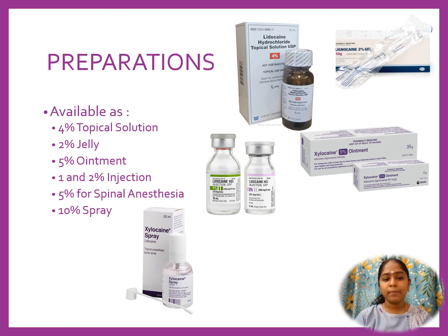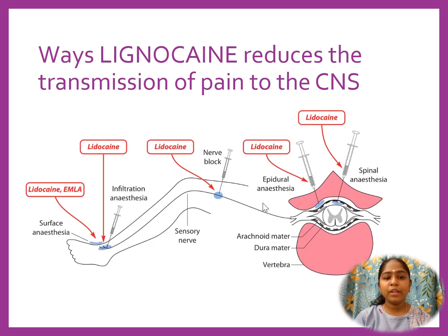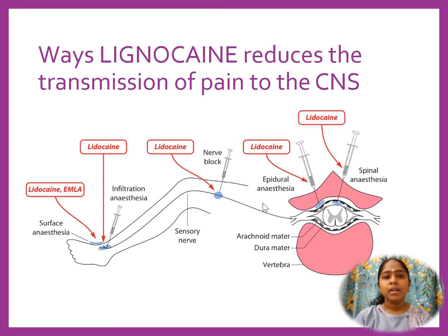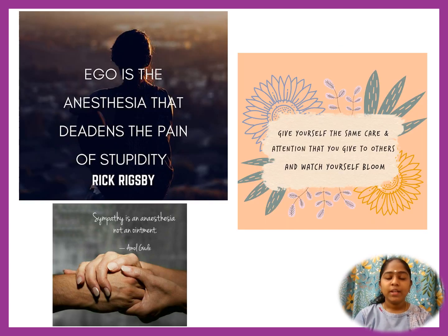Preparations available: 4% topical solution, 2% gel, 5% ointment, 1–2% injection, 5% spinal anesthetic, and 10% spray. Lignocaine reduces the transmission of pain to the CNS and can be used as a surface anesthetic, infiltration anesthetic, nerve block, or for epidural and spinal anesthesia.